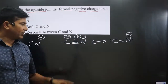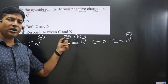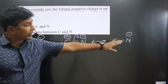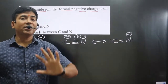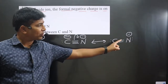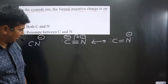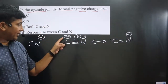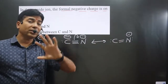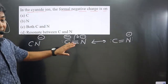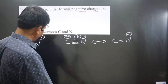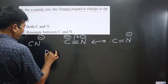The electron density moves toward nitrogen, so carbon is losing electron density — that's why its negative charge is gone. In one structure, carbon has the negative charge; in the other structure, nitrogen has the negative charge. In the first form, carbon is the donor side; in the second form, nitrogen is the donor side. The first is the cyanide ion and the second is the isocyanide ion.